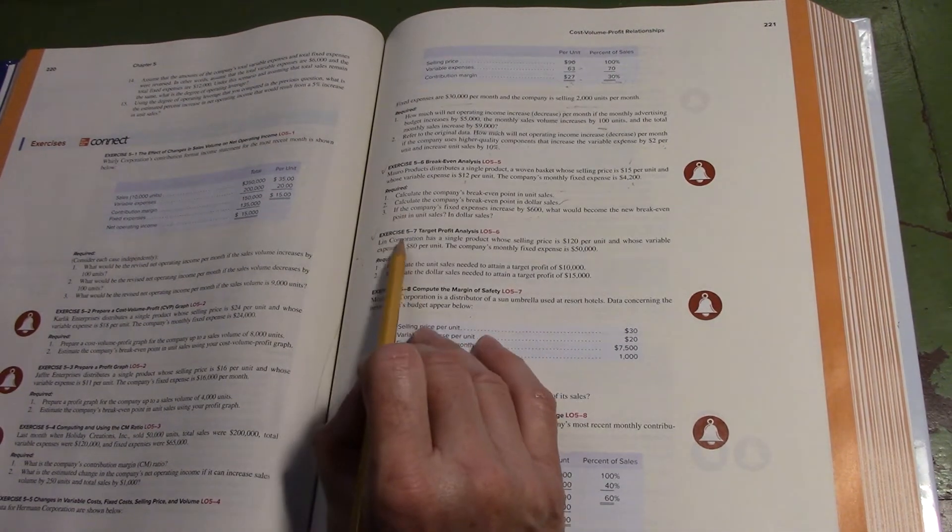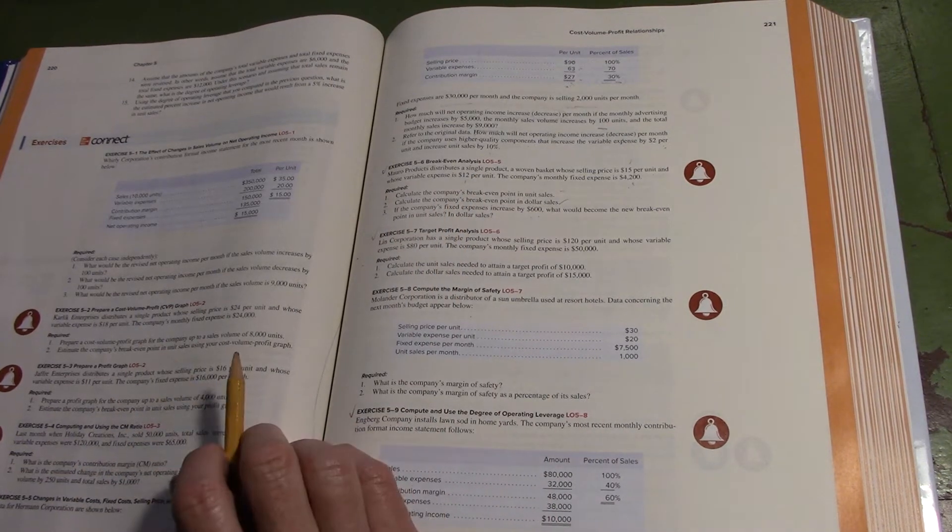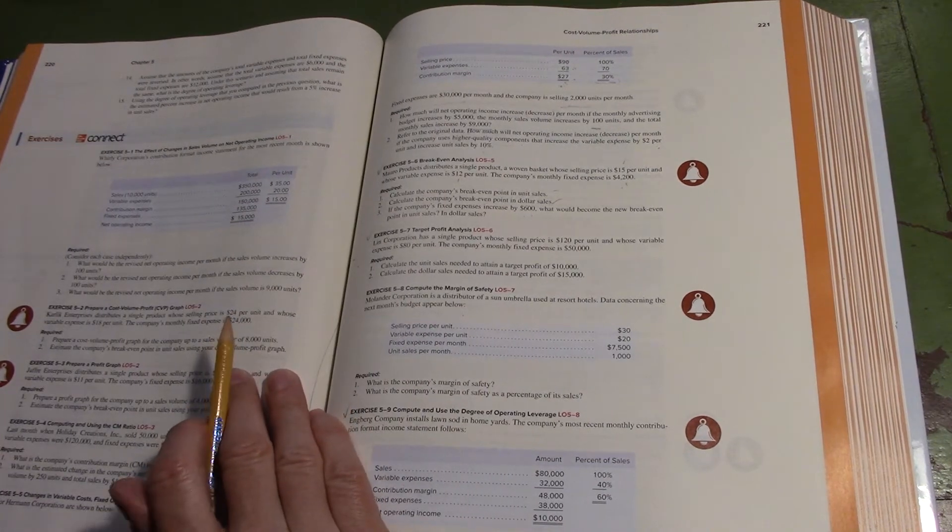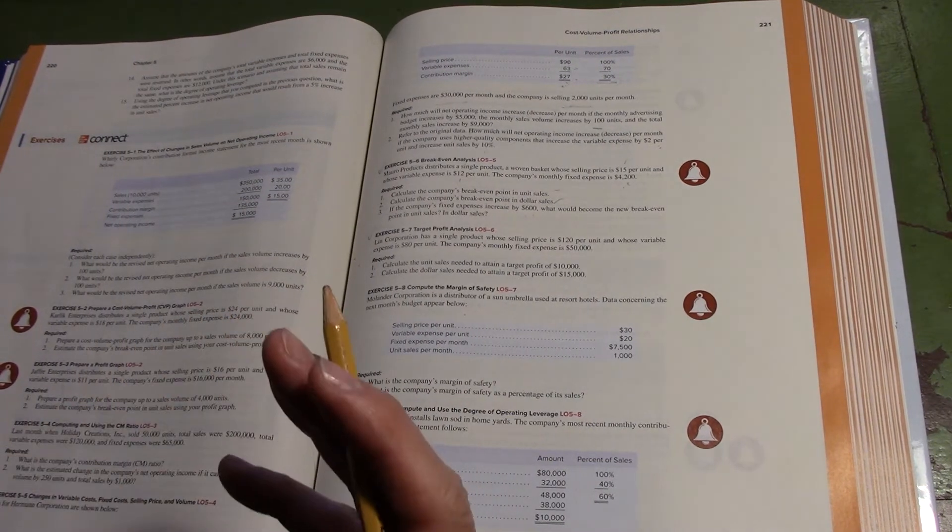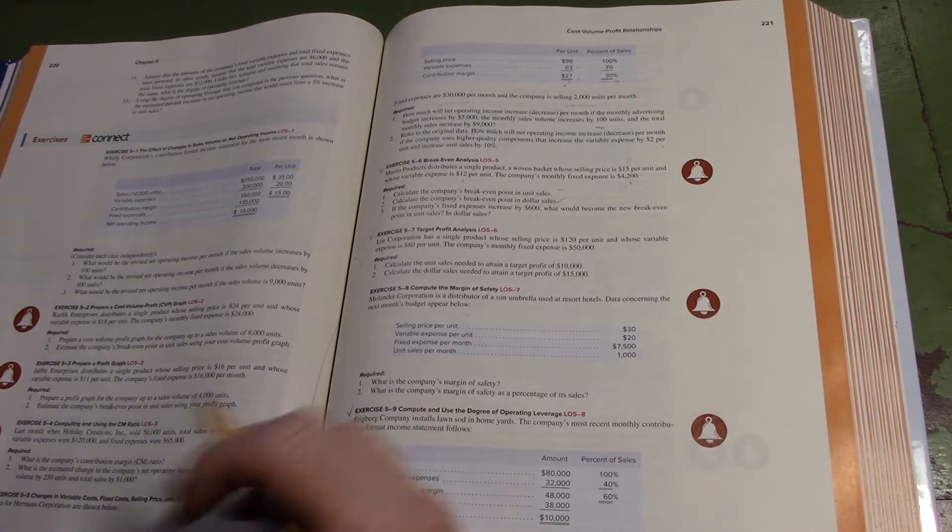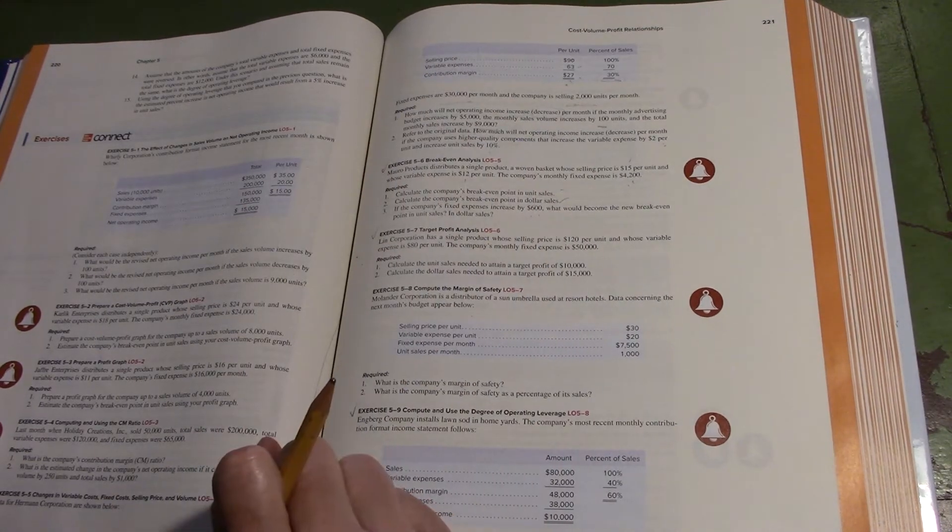Next, we're going to work exercise 5-7, which is one of those target profit analysis problems. Very similar to doing break-even, but instead of having zero for our profit, we'll have our target profit. We're using the same equation, and if you can do exercise 5-6, you'll be fine with 5-7.